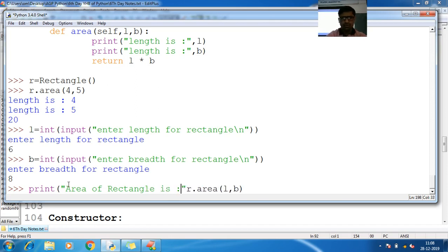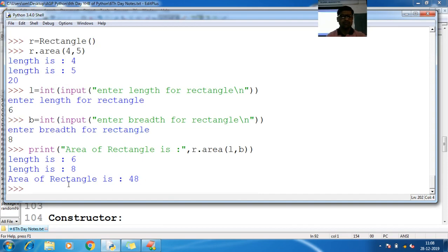R Rectangle is colon, closing basis. So length is 6, array, length second is breadth, and area of Rectangle is 48.